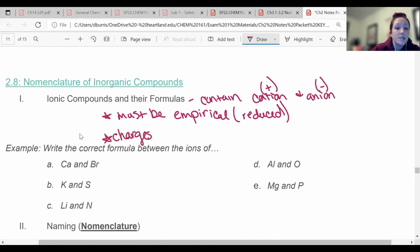And finally, their charges need to equal zero. They need to balance out. So if I have a plus two and a minus one of something, I need two of the negative one things so that everything can balance out to zero when you add them together. So we're going to do some examples to write the correct formula between the ions of all of these things.